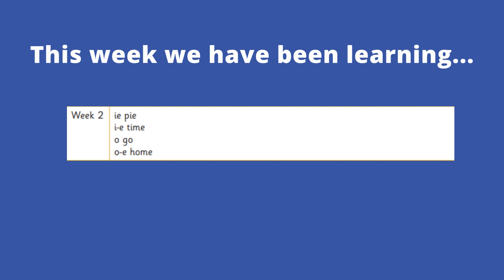This week the children have been learning two alternative ways of making the I sound and the O sound. They learnt this previously back in the Autumn term, and we're recapping it this term in preparation for our phonics screening check.